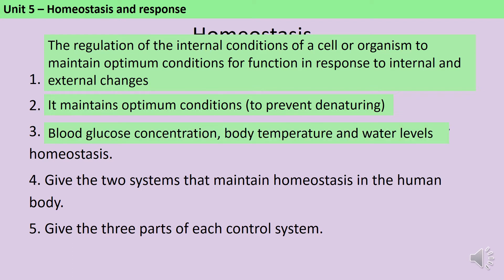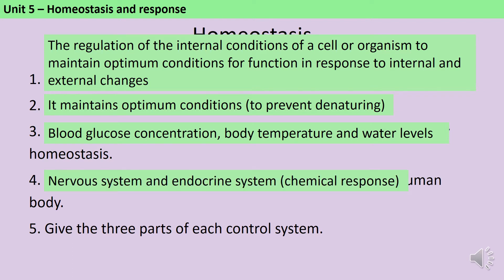Homeostasis is maintained by the nervous system and the endocrine system, which is the system of glands that make hormones, and this is sometimes called a chemical response. Each control system is made up of receptors, a coordination centre and effectors.